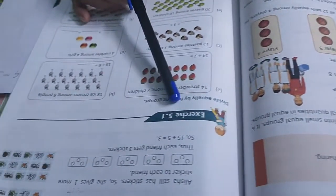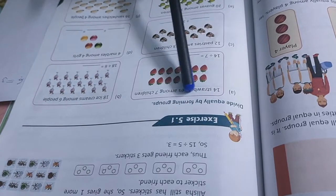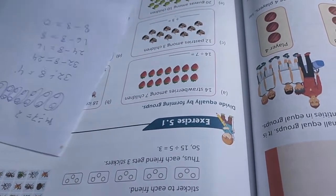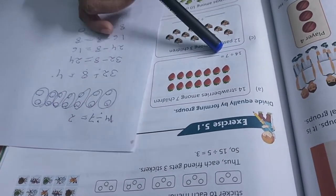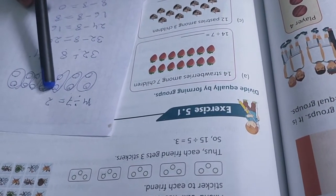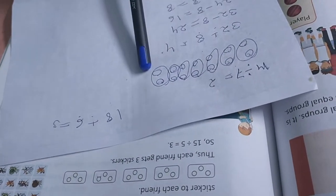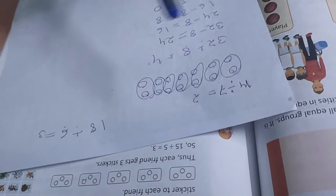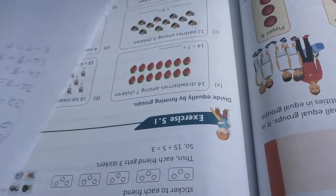Now go chapter 5, exercise 1. Divide equally by forming groups. See, here children, 14 strawberries among 7 children. 14 divided by 7. You tell the 7 tables, 2 will come in each group. So check here, 7, 7. 7 children are there, 14 strawberries are there. So each will get 2, 2, 2, 2, 2.